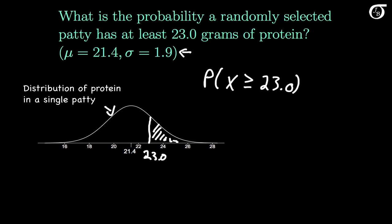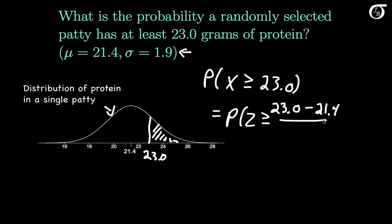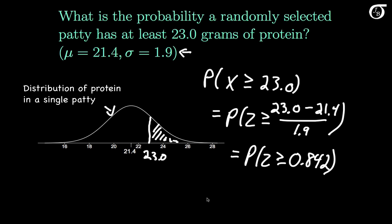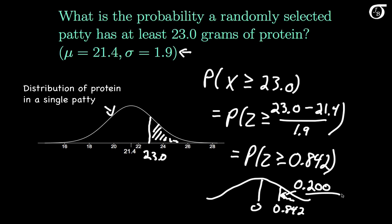To find that, we standardize by subtracting the mean and dividing by the standard deviation. This equals the probability that Z, where Z has a standard normal distribution, is greater than or equal to 23.0 minus 21.4, divided by 1.9. That simplifies to the probability that Z is greater than or equal to 0.842. Using software or a standard normal table, this probability is 0.200 to three decimal places.